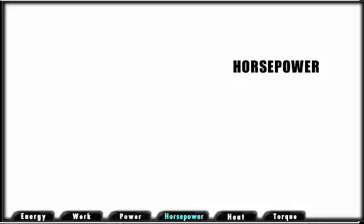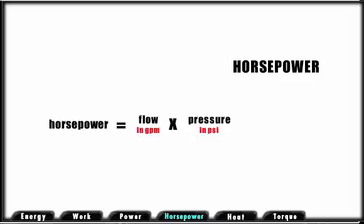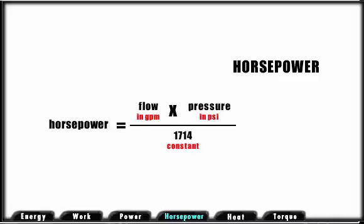Mathematically, hydraulic horsepower is expressed as follows. Horsepower equals flow in gallons per minute times pressure in pounds per square inch divided by 1,714, a constant.